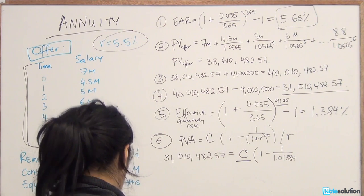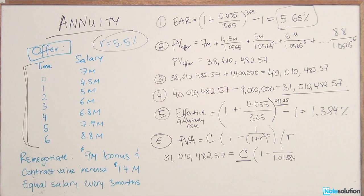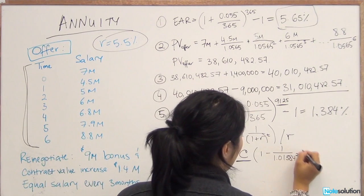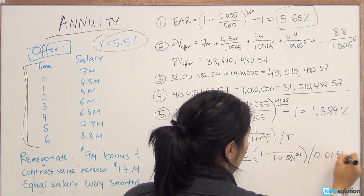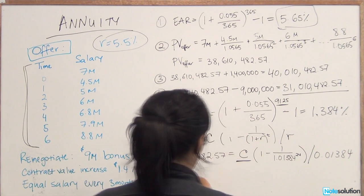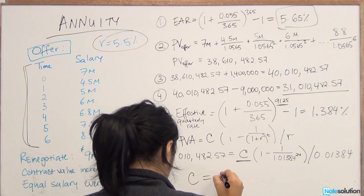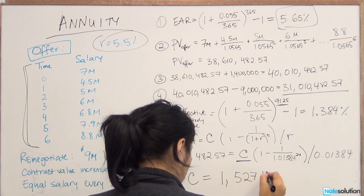Now, what are we going to use for our T? We have six years, but we know that he wants to get paid every three months or quarterly. So we're going to take six times four because there are four quarters in one year. That's going to be our time period. This is 24 divided by 0.01384. So once you simplify this equation, you get a quarterly payment of $1,527,000.